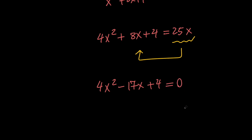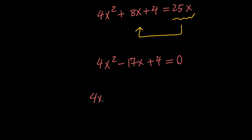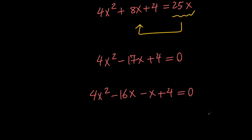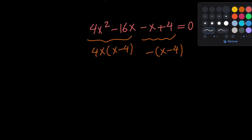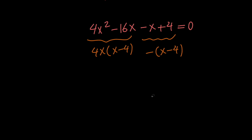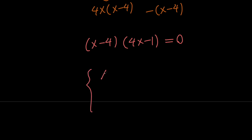Next, in order to factor this, let's go ahead and break negative 17 into negative 16 and negative 1. So we're going to have 4x squared minus 16x minus x plus 4 equals 0. We factor out 4x from the first two terms and a minus from the last two, giving us x minus 4 as the common factor. So the left hand side factors as x minus 4 times 4x minus 1. Since this product equals 0, we have two cases: either x equals 4 or x equals 1 fourth.